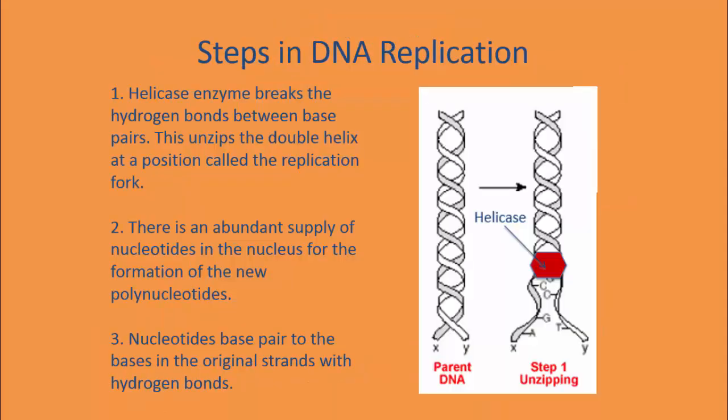There are six steps in DNA replication. Step one: helicase comes through and breaks apart all those hydrogen bonds. Step two: there is an abundant supply of nucleotides in the nucleus for the formation of new polynucleotides, so that DNA polymerase can attach them where they need to go.